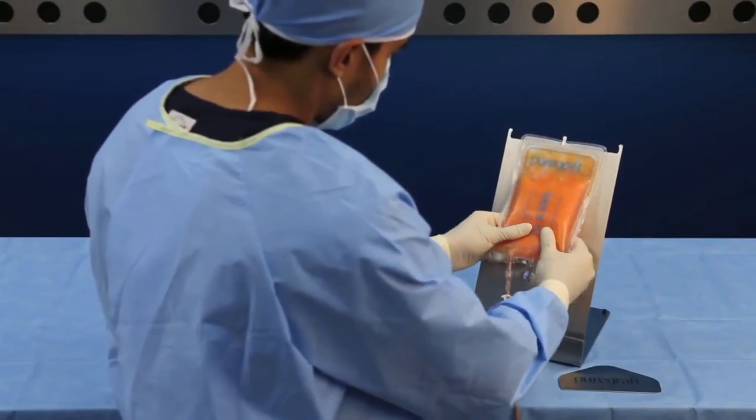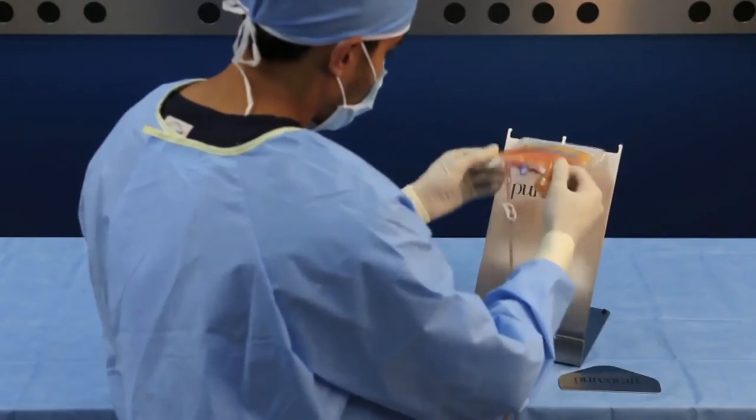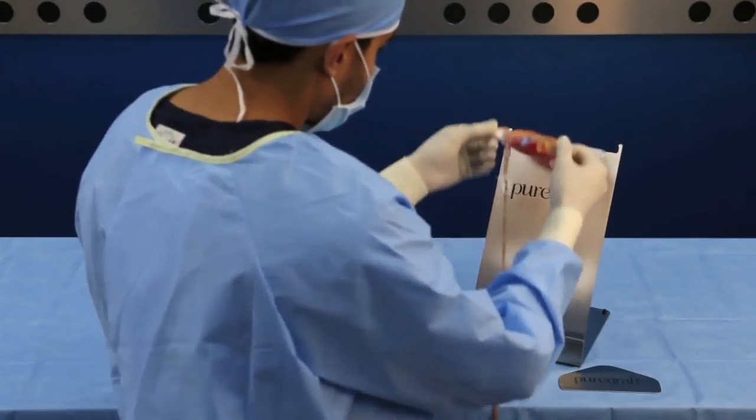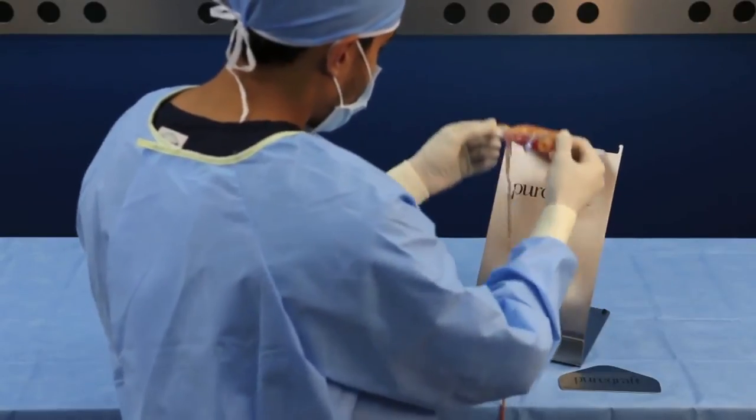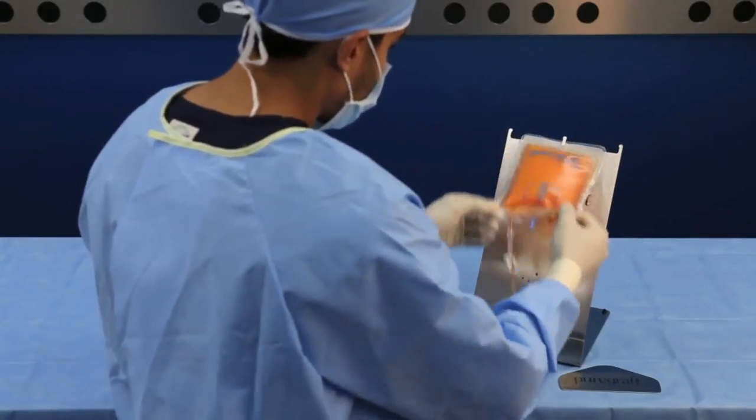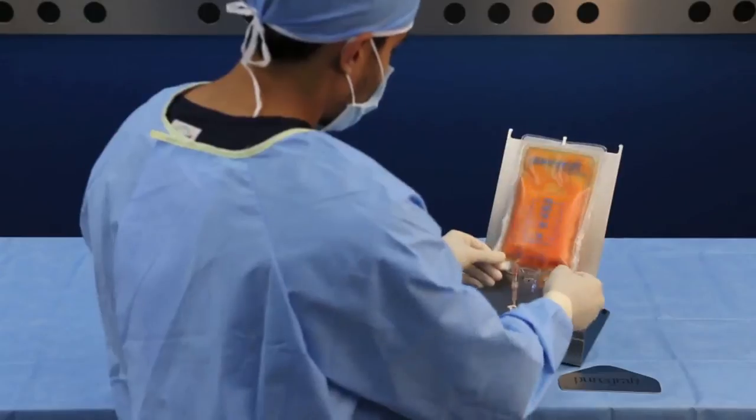Two proprietary filtration membranes line the length of the inside of the PureGraft. Tissue stays on one side, and only fluids, free lipids, blood cells, and other contaminants pass through the membranes and into the drain bag.